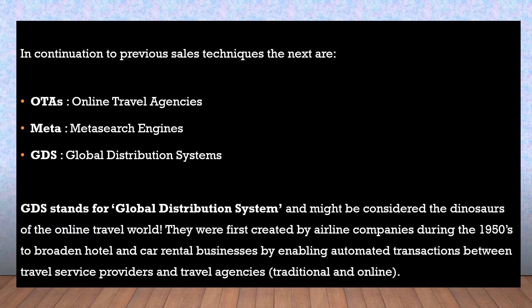In continuation to the previous sales techniques, the next are OTAs i.e. Online Travel Agencies, Meta i.e. Metasearch Engines, and GDS i.e. Global Distribution Systems. GDS stands for Global Distribution Systems and might be considered the dinosaurs of the online travel world.